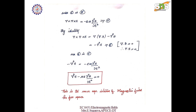Substituting this on the left hand side, the final equation obtained is del square H minus mu epsilon dou square H by dou t square equals 0. This is the wave equation obtained in terms of magnetic field for free space.